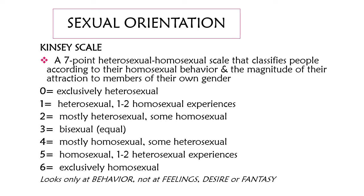The Kinsey Scale is a seven-point scale that goes from zero — exclusively heterosexual — to six — exclusively homosexual — with three being equal. You've got ones and twos leaning towards heterosexual with some homosexual, or fours and fives leaning towards homosexual with some heterosexual. What's actually found is that if you looked at actual feelings, desire, and fantasy, even people who think they're a zero or a six tend to actually be closer to a one or a five.